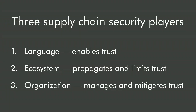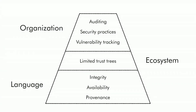I'm going to talk about three major players in securing the software supply chain. The first one is the language itself, which provides the mechanics through which we import dependencies and delegate trust to them. The ecosystem is the set of open source software and people that actually provide this software. And then finally there's you, the organization, the final consumer of the software. Each of these players has a number of responsibilities.